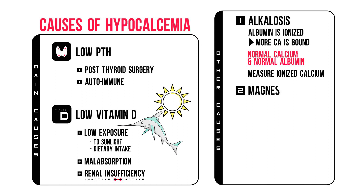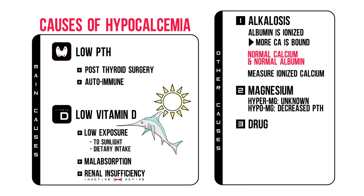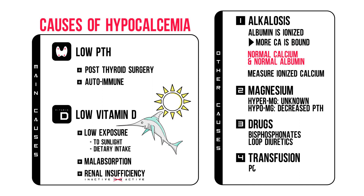Magnesium: both elevated as well as low magnesium levels can cause hypocalcemia. For elevated magnesium, the mechanism is unknown. For hypomagnesemia, it is because it decreases PTH release and increases PTH resistance. Drugs — notably bisphosphonate treatment and loop diuretics. Transfusion: packed cells contain citrate, which binds to calcium.